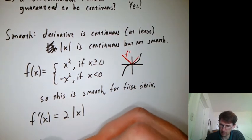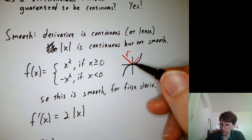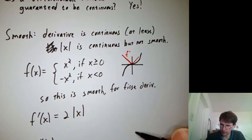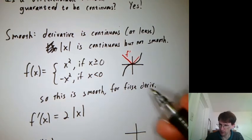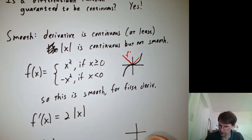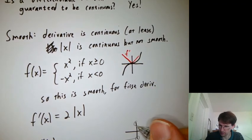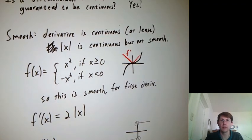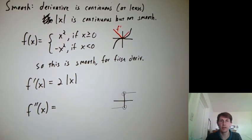What about f double prime? Let's think about what's the derivative of this function, the absolute value function. Well, it's all negative for a while, and then it jumps up to be all positive. And so that's not continuous, right?